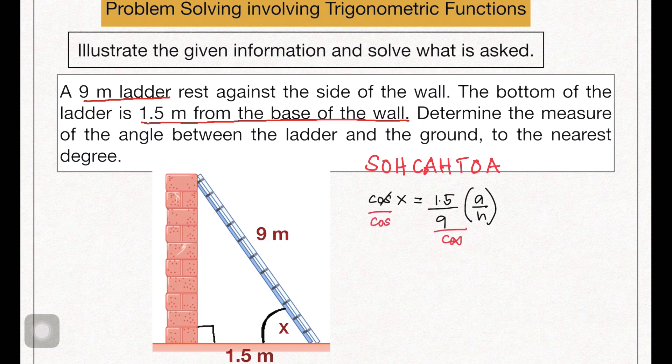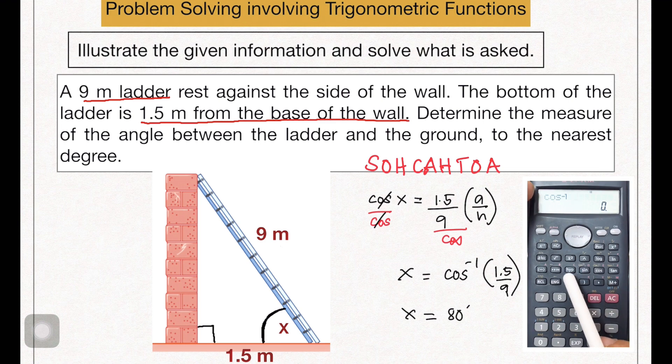Dividing both sides by cosine, solve it algebraically. Remember that dividing by cosine can be represented by cosine to the power of negative 1. Through the power of the calculator, the value of x is equal to 80 degrees because it says here nearest degree.